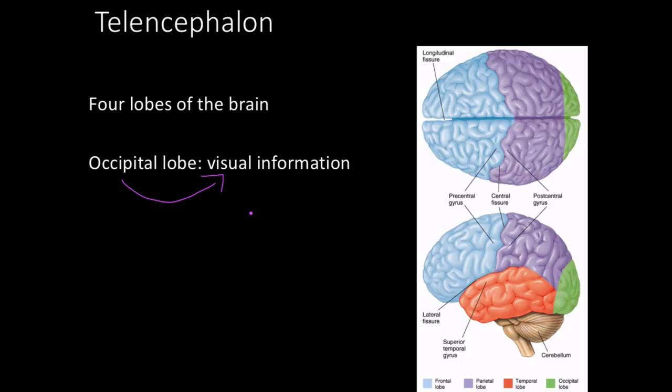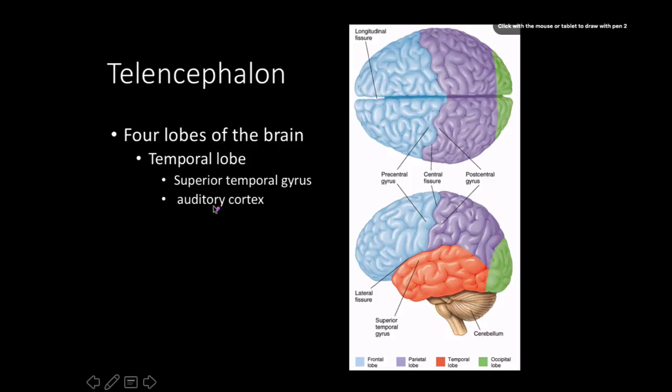The occipital lobe processes visual information through the optic chiasma. A reliable sign of a severe head injury or concussion is seeing a flash of red, because when the skull is impacted, the brain bounces and presses against the occipital lobe, causing that visual experience — indicating serious injury.